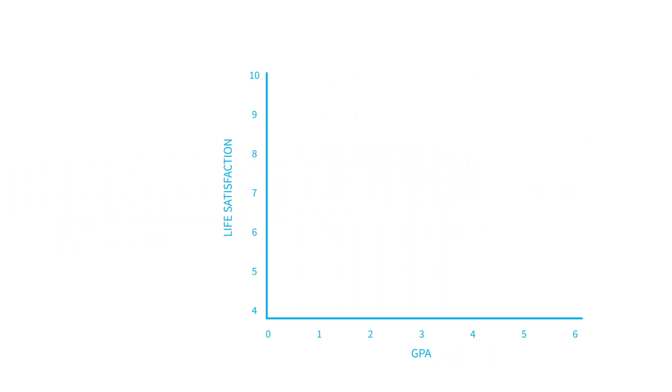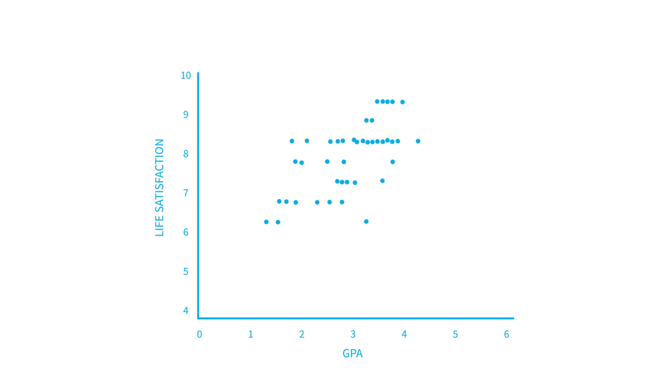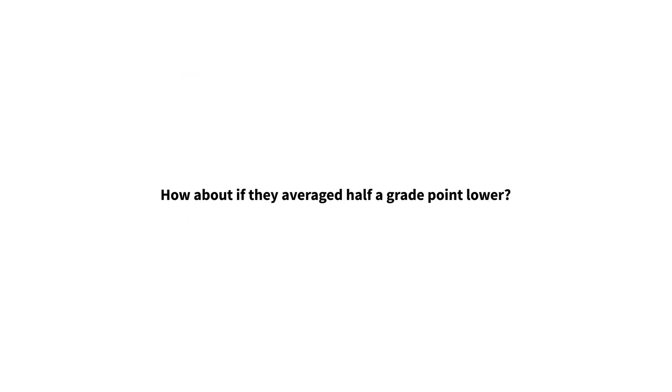Using a scatter diagram, we can plot the life satisfaction score of individuals in our sample against their average academic achievement. We can see that there is a pattern, but can we say how much more satisfied with life people can expect to be if they averaged one grade point higher at school? How about if they averaged half a grade point lower?